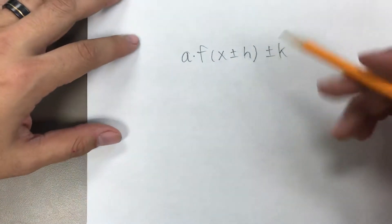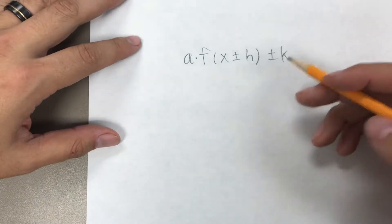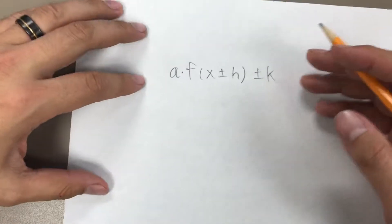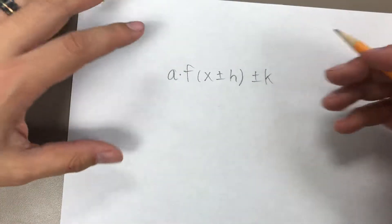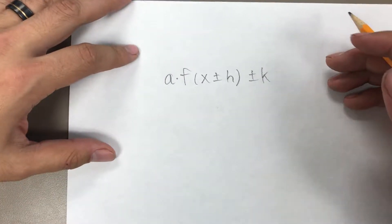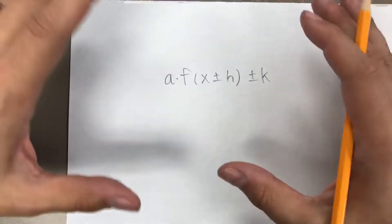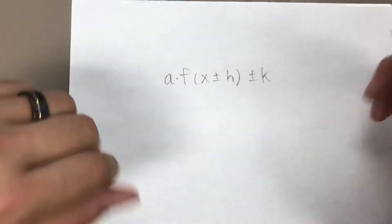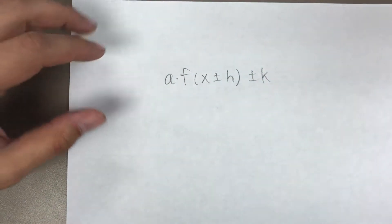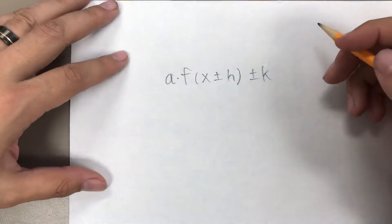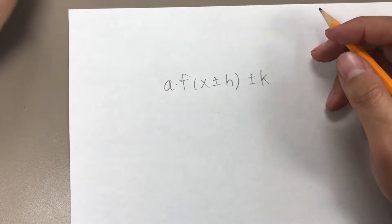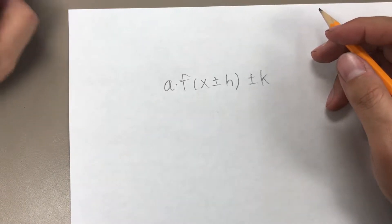The transformations can shift the graphs around — move them up and down, left and right, dilate them, make them larger, make them smaller, rotate them around axes, and reflect them over axis lines.